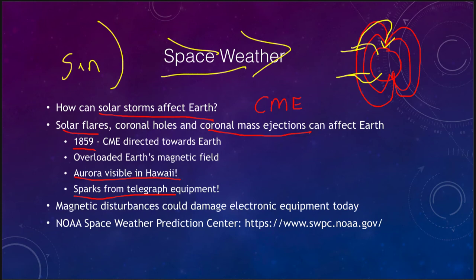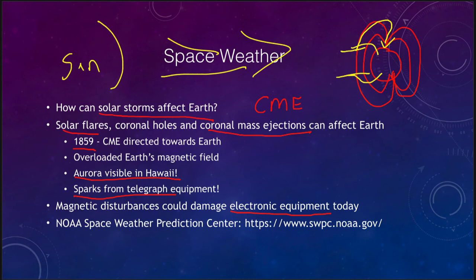What would happen today could be much more damaging if a major CME were to hit. Back in 1859 there was not much electronic equipment — the state of the art was the telegraph. Today, satellites in space would be especially exposed because as the Earth's magnetic field is deformed they lose protection, and their internal electronics could get completely fried. This could cause major damage to our communication systems. You can check current space weather at the NASA NOAA Space Weather Prediction Center website.